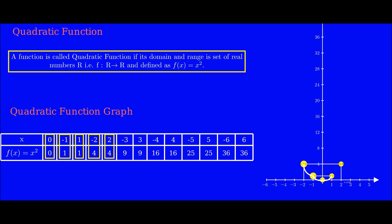Again, for the value of x equal to minus 3, f(x) would be 9. And again, for the positive value of x which is 3, f(x) would be 9. You can see that the graph is becoming like a bowl.